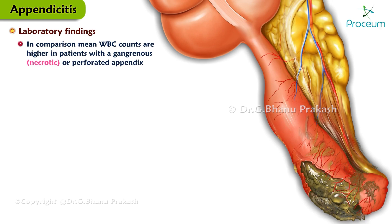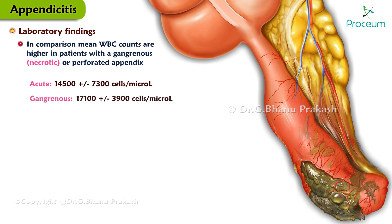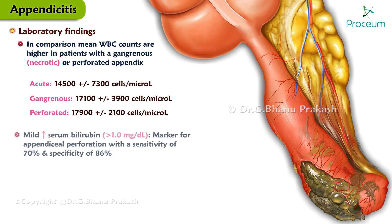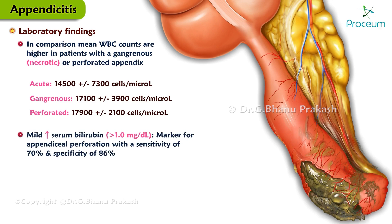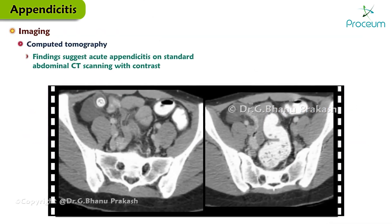Acute appendicitis is associated with white blood cell counts of about 14,500 ± 7,300 cells per microliter. Gangrenous appendicitis results in a count of about 17,100 ± 3,900 cells per microliter. When the appendix is perforated, the mean white blood cell count is about 17,900 ± 2,100 cells per microliter. Mild elevations in serum bilirubin have been noted as a marker for appendiceal perforation, with a sensitivity of about 70% and a specificity of about 86%.